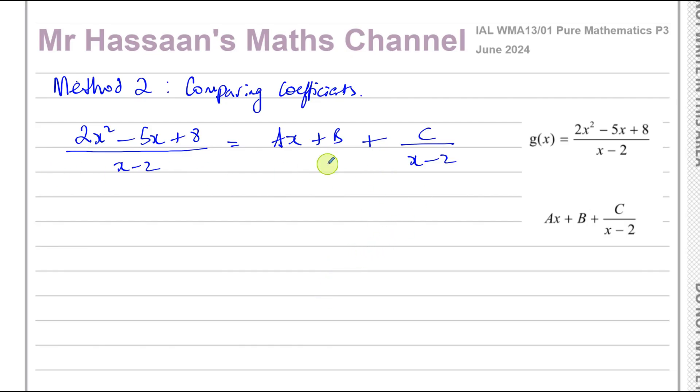What we can do is multiply both sides by x minus 2, in which case you get 2x squared minus 5x plus 8 equals Ax plus B times x minus 2. And you multiply this by x minus 2, you end up with plus C. x minus 2 cancels.